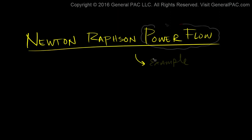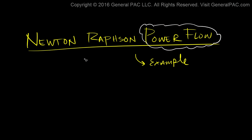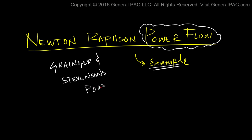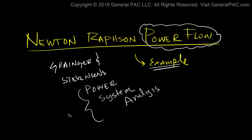The Newton-Raphson Power Flow example. In this tutorial we'll be doing a practical example on Power Flow using the Newton-Raphson method. This is more of an example-based tutorial rather than going through what the theory says and how the theory works. This example comes from Granger and Stevenson's Power System Analysis book, which is used in many different classes and universities. We're going to be going over example 9.4 within this book — specifically section 9.3, example 9.4.